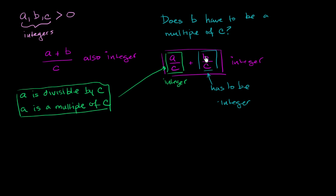And if b over c is an integer, that means that yes, b must be a multiple of c. So the answer here is yes.